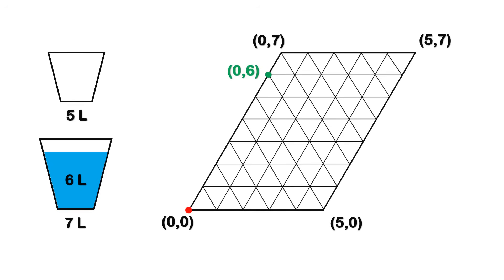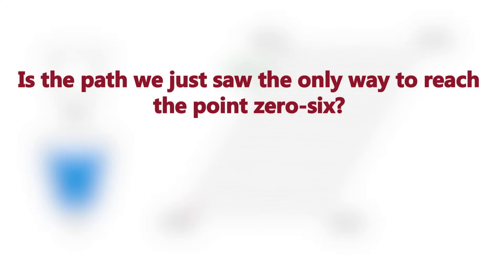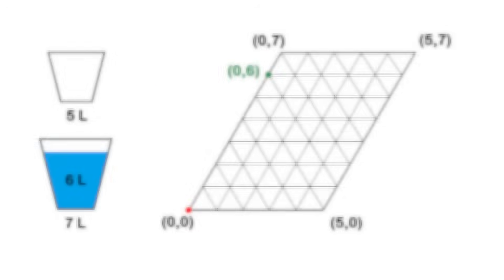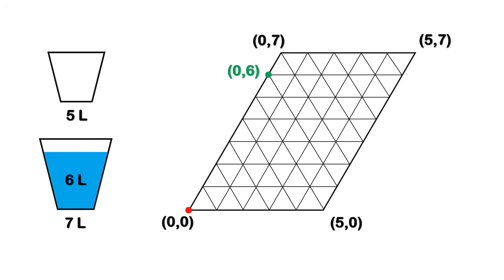Is the path we just saw the only way to reach the point (0,6)? The answer is no. There are other paths as well. One of the simplest alternative paths is to start the movement, not with the 5-liter bucket, but with the 7-liter bucket. That means instead of going from (0,0) to (5,0) as the first move, we directly fill the 7-liter bucket and move to the point (0,7).